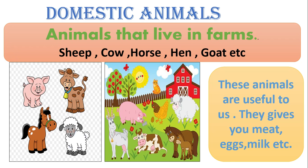Next is domestic animals. Domestic animals are useful to us. They live on farms and they give us meat, milk, eggs, and wool. You get wool from sheep, eggs from hen, meat from chicken, and they carry loads like horse. So sheep, cow, horse, hen, goat, and pig are called domestic animals. They are very useful to us and they live on farms.